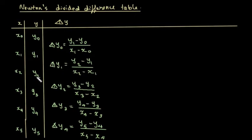Similarly, Δy₃ = (y₄ minus y₃) divided by (x₄ minus x₃), and Δy₄ = (y₅ minus y₄) divided by (x₅ minus x₄). So in general, Δyᵢ = (yᵢ₊₁ minus yᵢ) divided by (xᵢ₊₁ minus xᵢ).